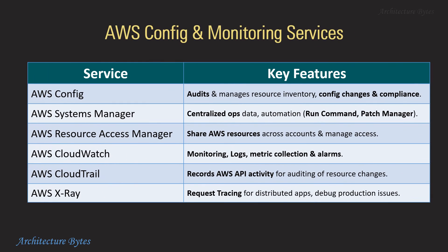AWS config and monitoring services: AWS Config audits config changes and compliance. Systems Manager provides centralized ops data and automation. Resource Access Manager is used to share AWS resources across accounts. CloudWatch handles monitoring logs, metric collection, and alarms. CloudTrail records AWS API activity for auditing of resource changes. AWS X-Ray provides request tracing.